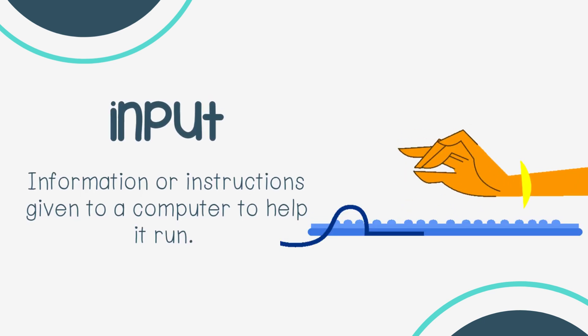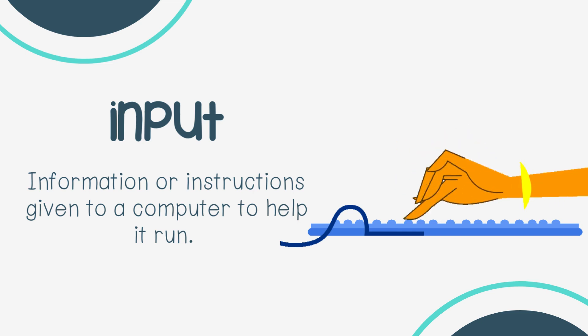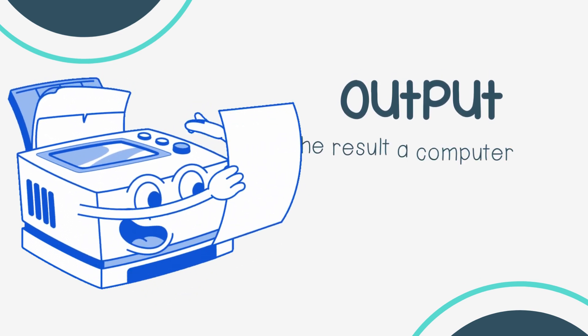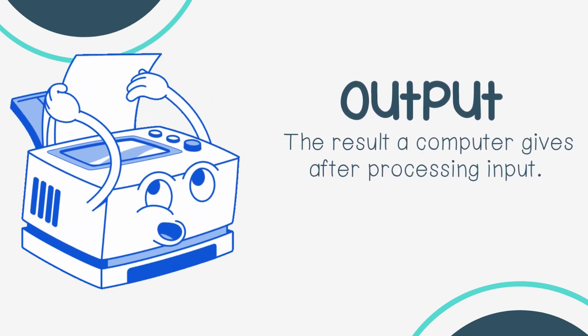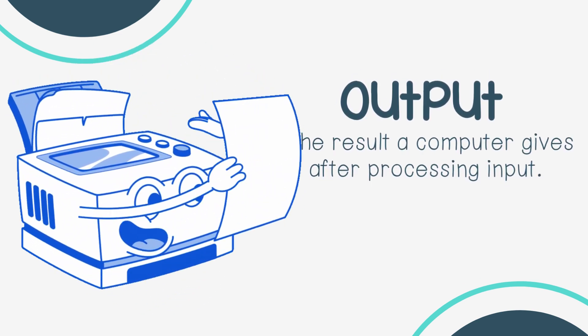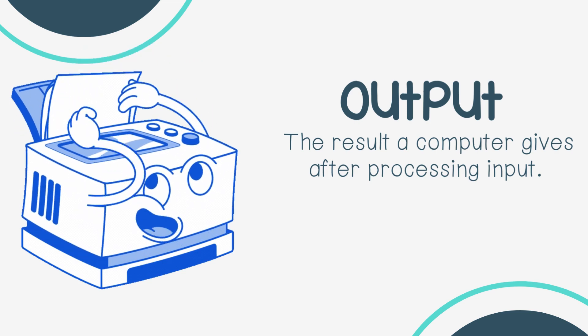Input: information or instructions given to a computer to help it run. Output: the result a computer gives after processing input.